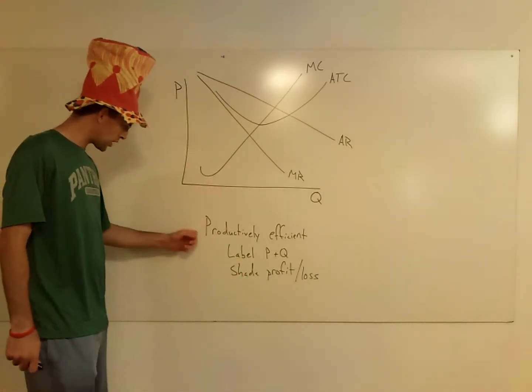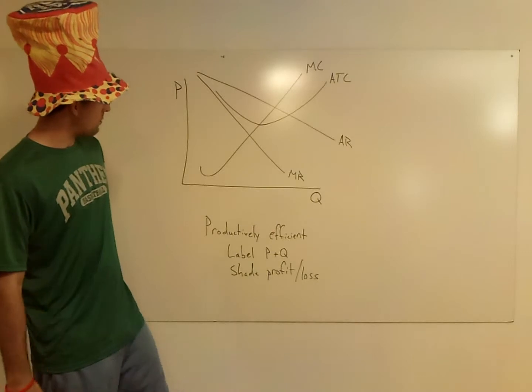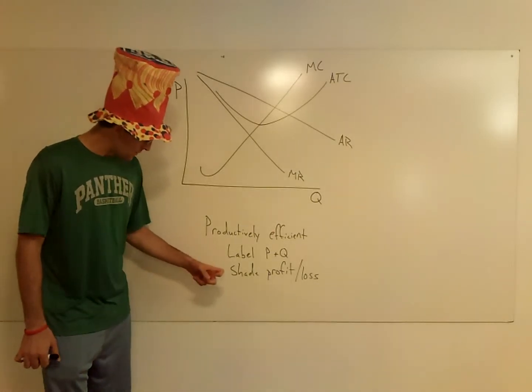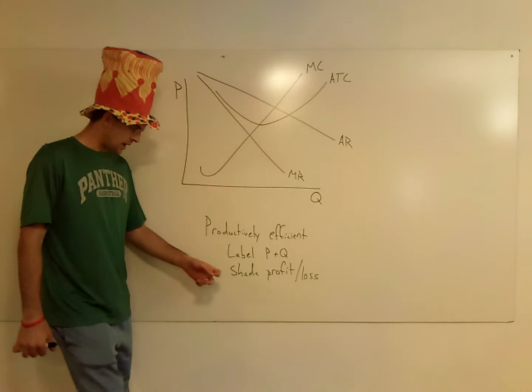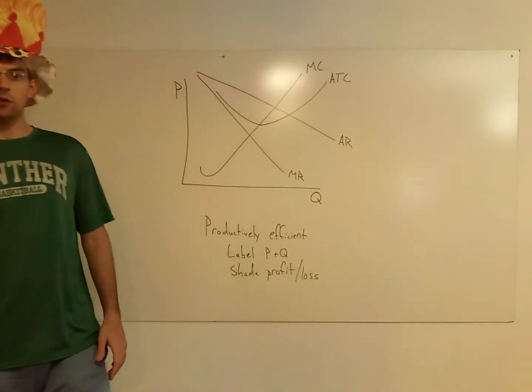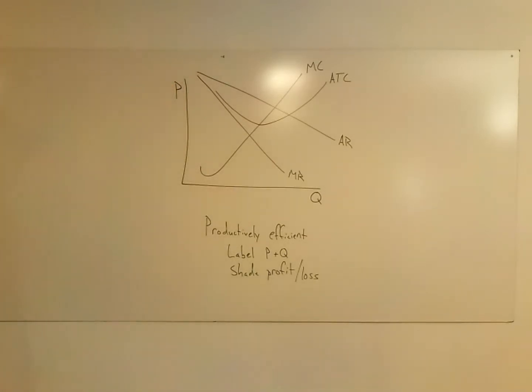But I'm going to ask you about a productively efficient monopoly. I want you to label your price and quantity, P and Q, and I want you to shade your area of profit or loss. Take a second here. See if you can figure out where I am going to take us. I'll pause for just a moment.